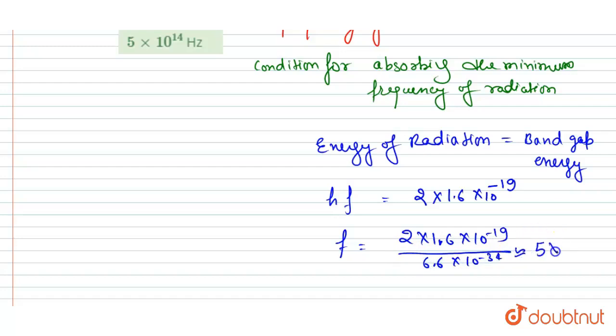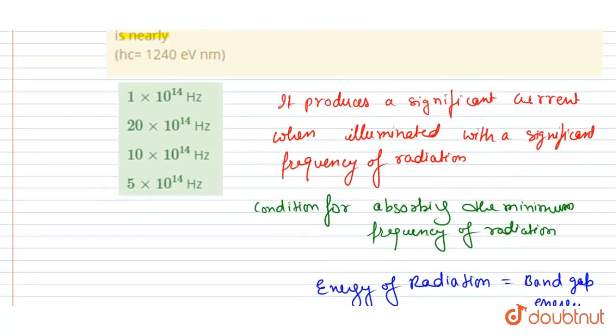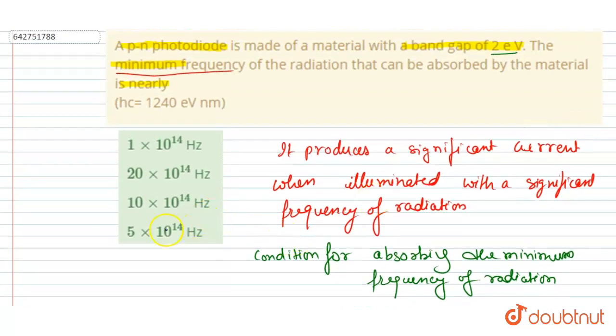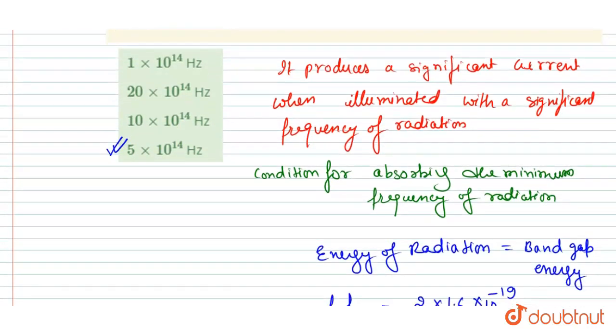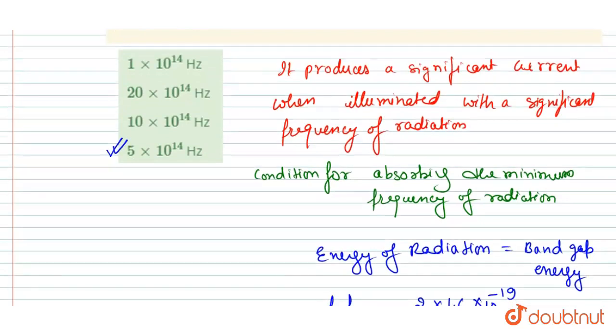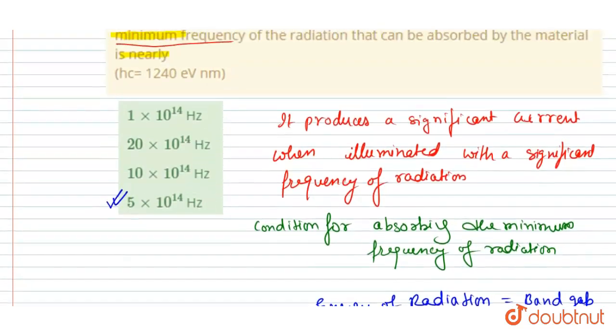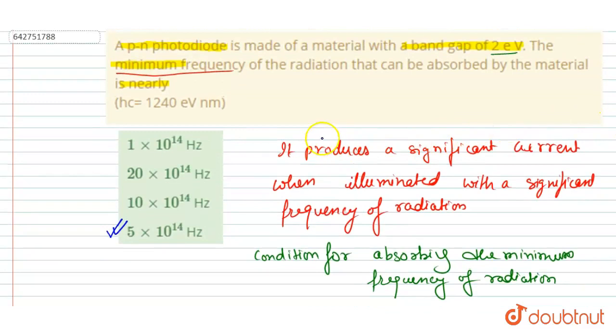If you solve this, this is nearly equal to 5 × 10^14 Hz, and this will be the answer to this question. If you see, 5 × 10^14 Hz is present in option D, so option D will be the correct one. What did we do here? We just equated the energy of radiation with the band gap energy. Since we have to find out the minimum frequency of the radiation, that is 5 × 10^14 Hz. Thank you.